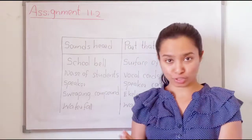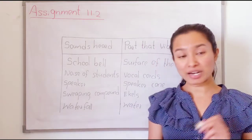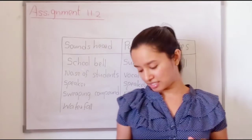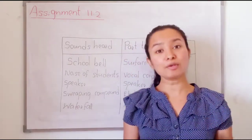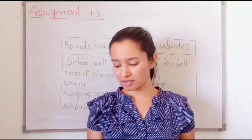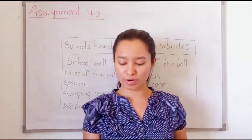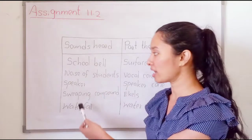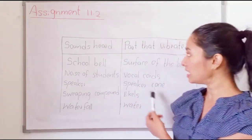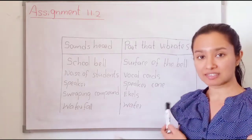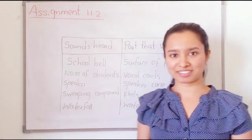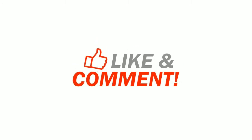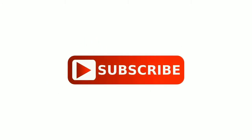Don't write musical instruments here, because you have to do the next assignment — assignment 11.3, page number 5. Here you have to list the musical instruments we commonly use. Then you have to mention the method of producing sound in each listed instrument — that means the part that vibrates. You have to write the name of the musical instrument and the method of producing sound. You can do it.